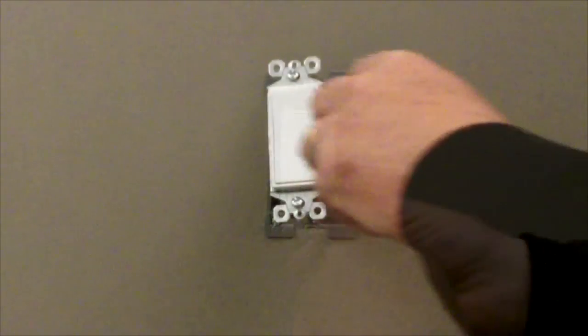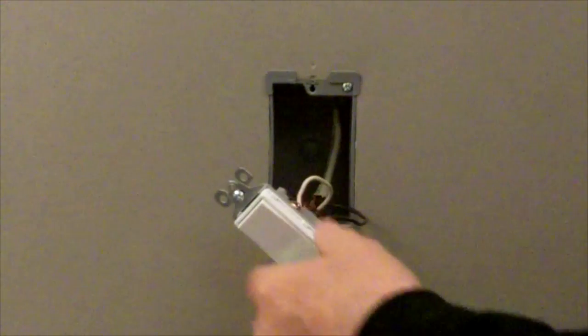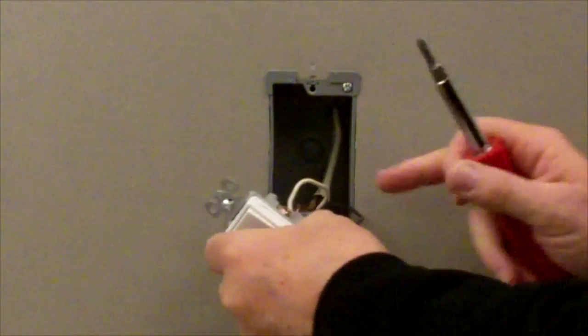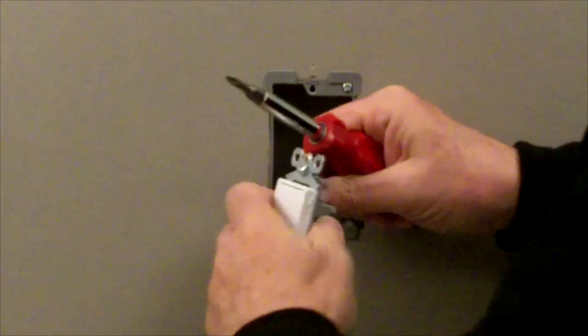Prepare to install the RT1 by removing the existing wall plate and mounting screws. Pull the old switch from the wall box. Disconnect the wires from the existing switch.